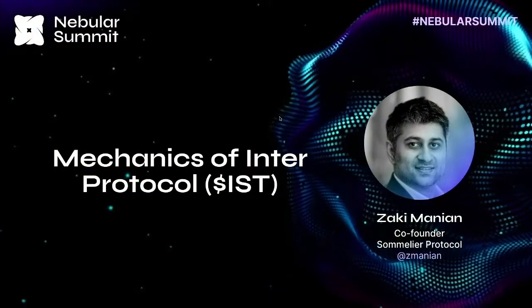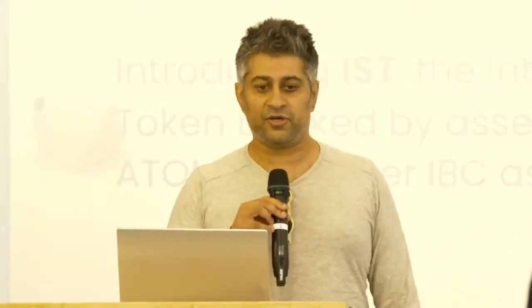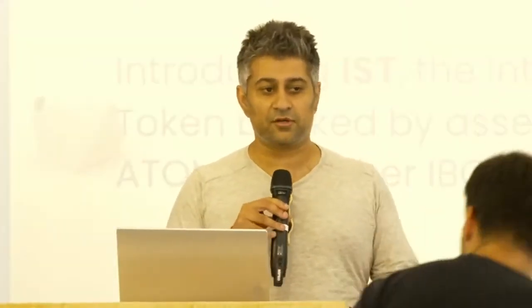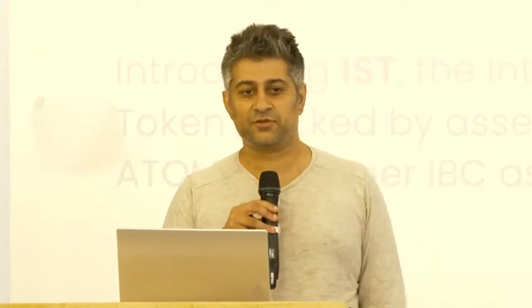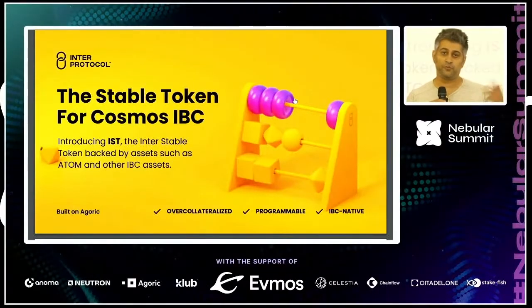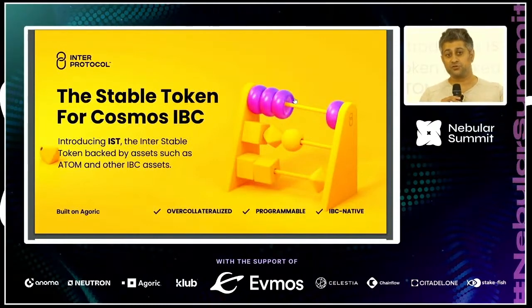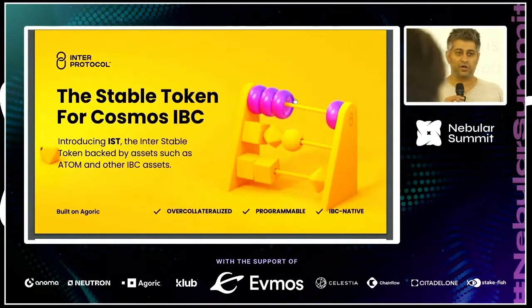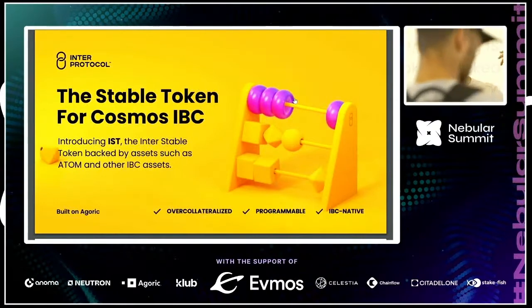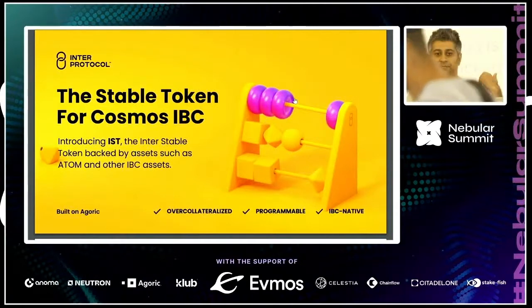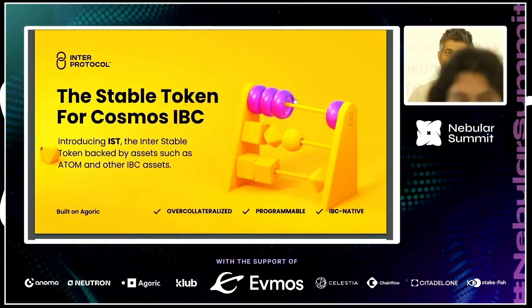What is IST? IST is a stablecoin. You may have heard there was a thing that happened to the stablecoin that was sort of dominant across the IBC ecosystem. We've been working on IST for more than a year. It is what you would imagine as the first use case of the Agoric platform — an IBC-connected smart contract layer that lets you write smart contracts in JavaScript and build arbitrary DeFi things on top of it.